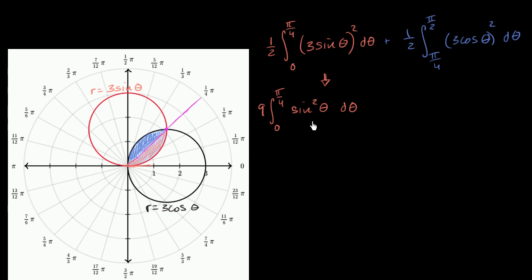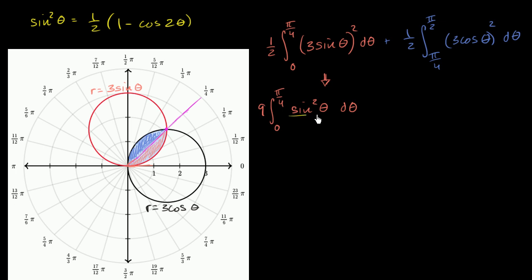You could evaluate this by hand, in a calculator, or analytically. Sine squared theta is the same thing as one half times one minus cosine of two theta — a trigonometric identity we've seen a lot. So sine squared theta equals one half times one minus cosine of two theta. Replacing that in, we get nine halves times the definite integral from zero to pi over four of one minus cosine two theta, d theta.